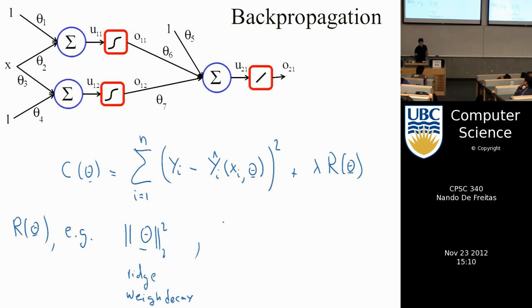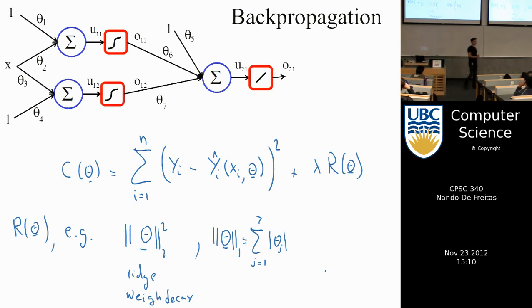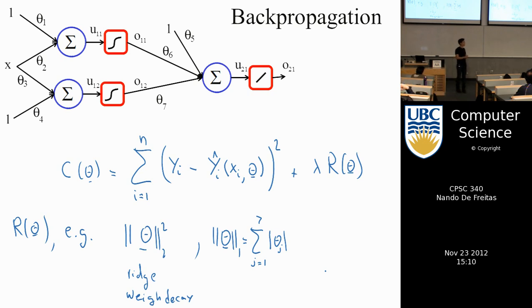We can also use the L1 norm of the vector theta, which is the sum of absolute values of the parameters. The L1 regularizer is useful because it forces theta values to go precisely to zero, effectively causing some inputs to disappear. If we had several inputs, we could arrange for some of those inputs to be removed, thereby deciding which inputs are relevant.